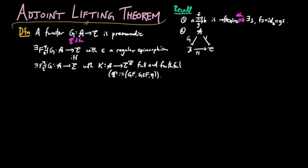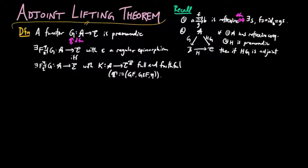Given a commutative triangle, if the category A has reflexive co-equalizers, and H is premonadic, then if HG is an adjoint functor then G is also an adjoint functor.